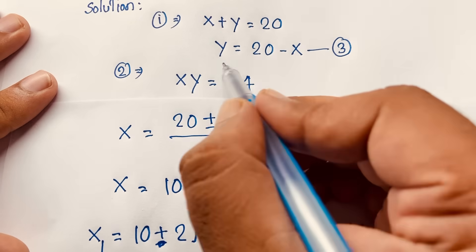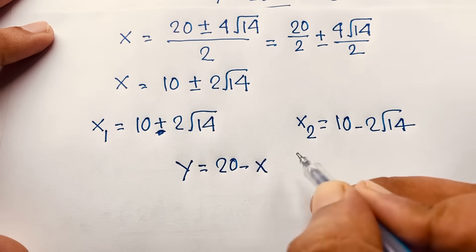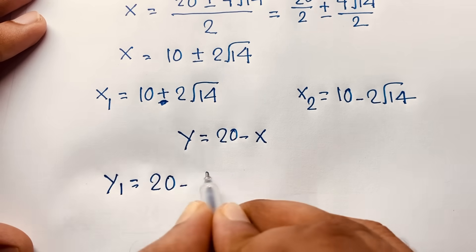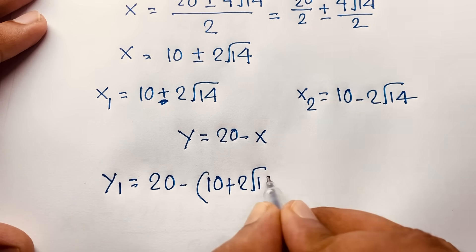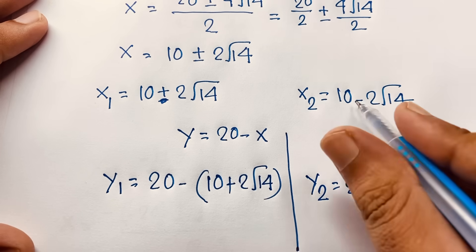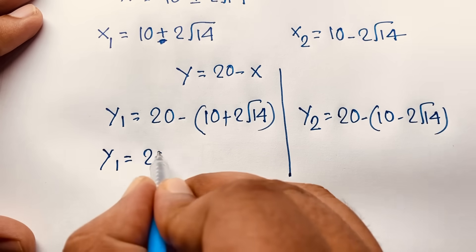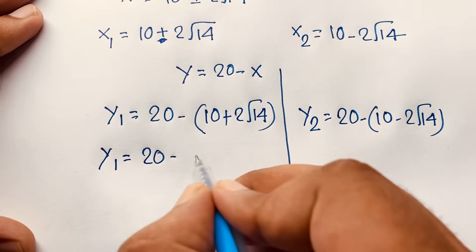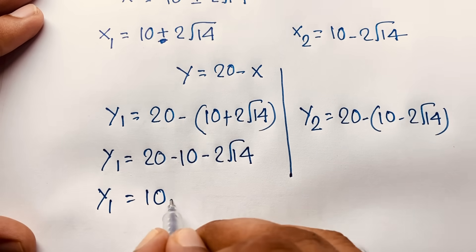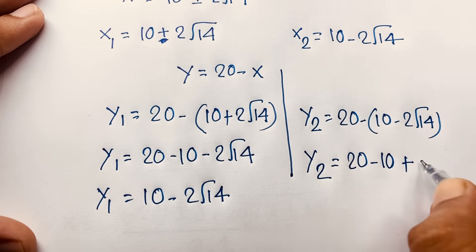Now finding y. Remember y equals 20 minus x. For y₁: y₁ equals 20 minus x₁ equals 20 minus (10 plus 2 square root 14), which gives 10 minus 2 square root 14. For y₂: y₂ equals 20 minus x₂ equals 20 minus (10 minus 2 square root 14), which gives 10 plus 2 square root 14.